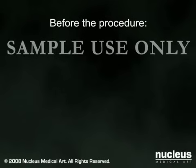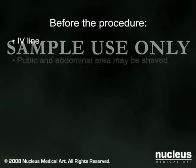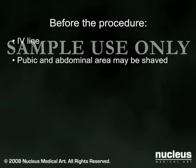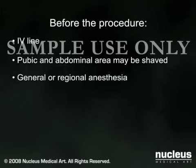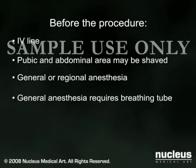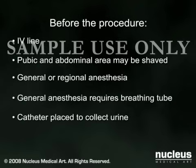When you arrive at the hospital for your surgery, an intravenous line will be started. If you are having an abdominal hysterectomy, your pubic and abdominal area may be shaved. Hysterectomies may be done under general or regional anesthesia. If you are receiving general anesthesia, you will be asleep for the duration of the procedure and a breathing tube will be temporarily inserted through your mouth and into your throat to help you breathe during the operation. A catheter will be placed into your bladder to drain your urine during surgery.